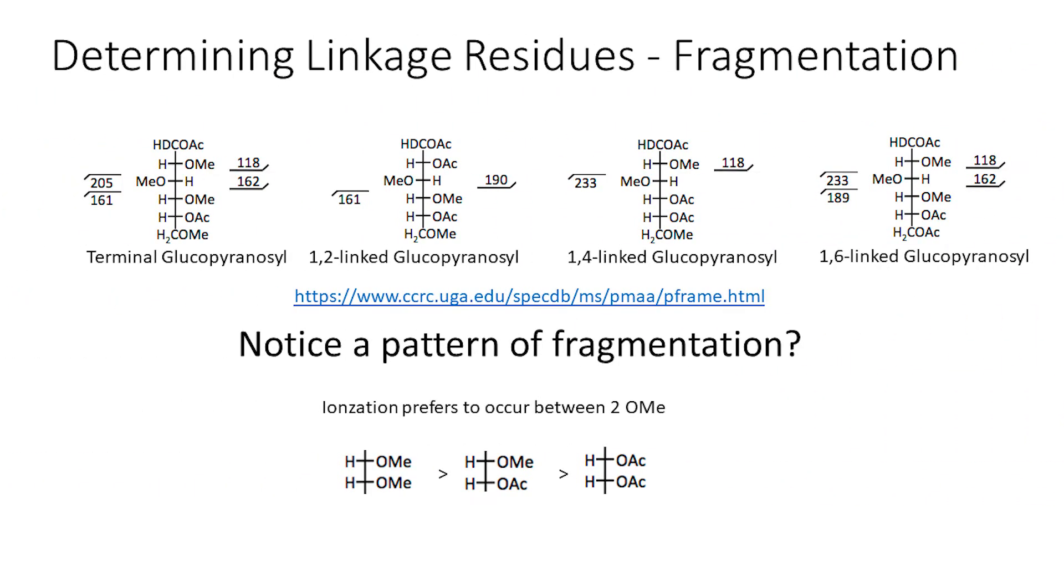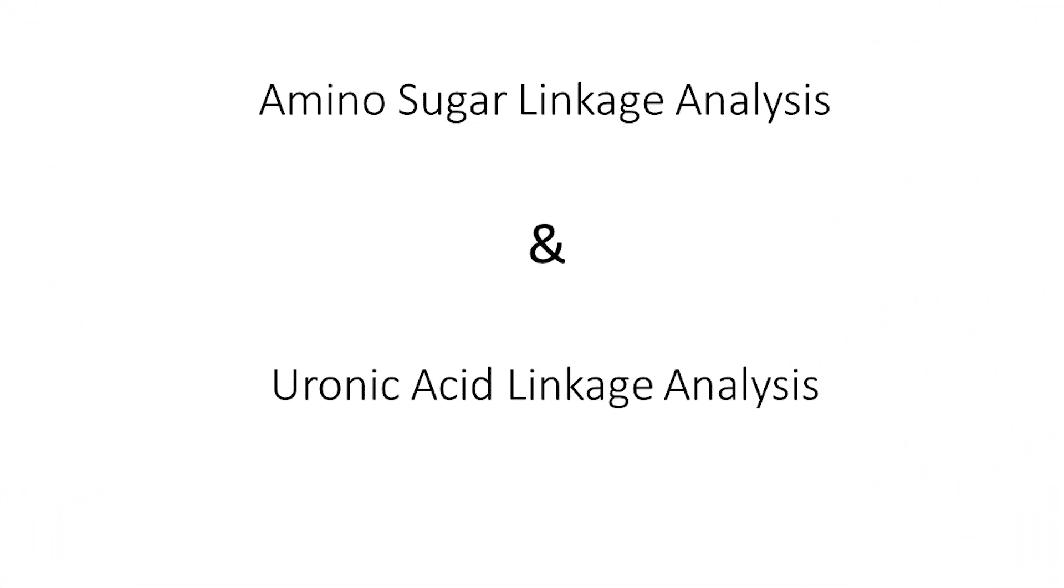Here we show the fragmentation for terminal and other single-linked glucopyranosyl PMAA residues taken off the CCRC database. The trend for the most common fragmentation is that the ionization occurs between two O-methyl groups more favorably than O-methyl and O-acetyl groups or two O-acetyl groups.